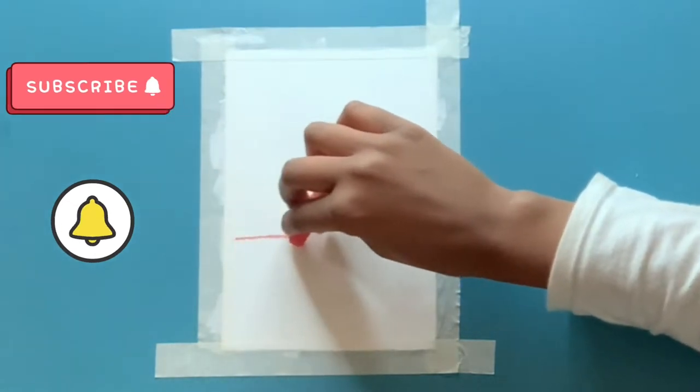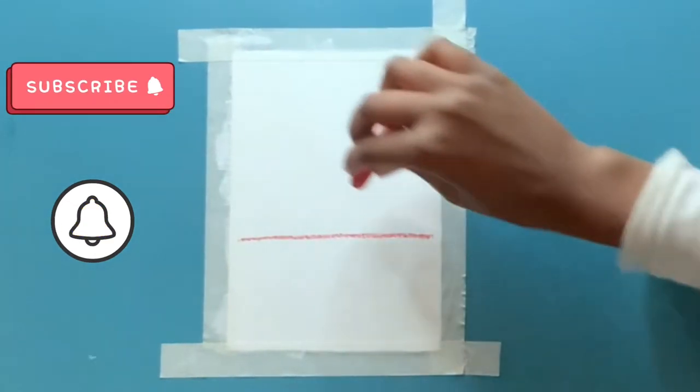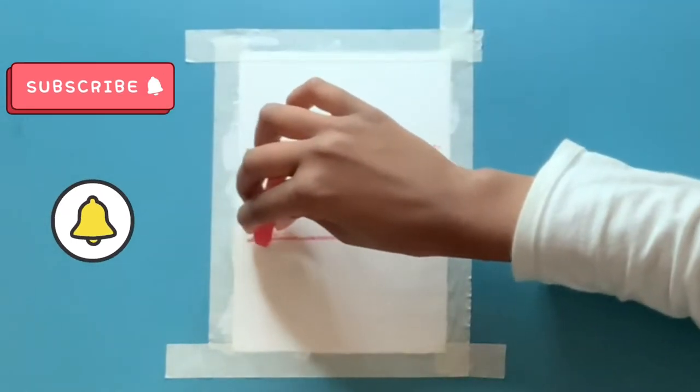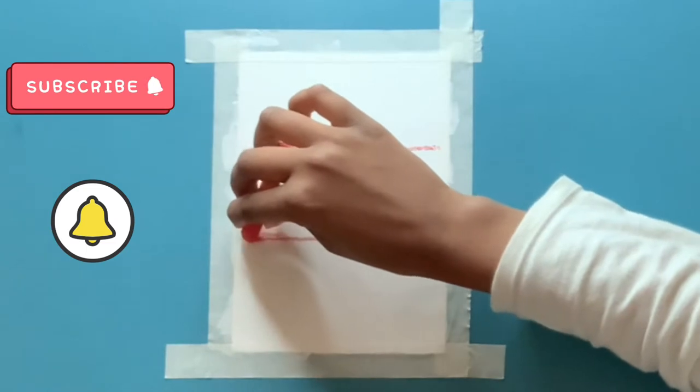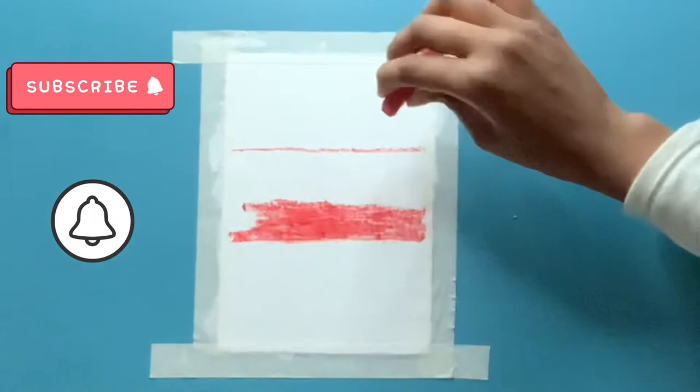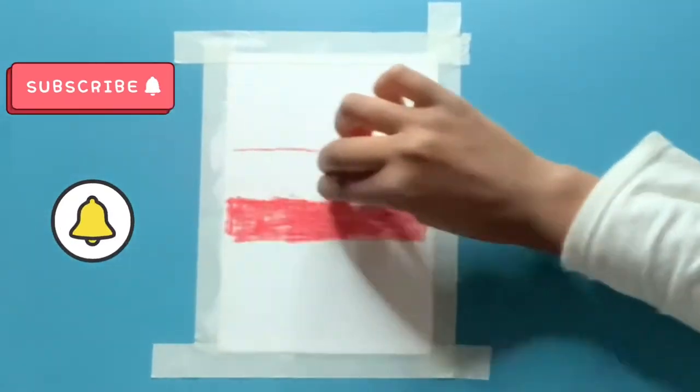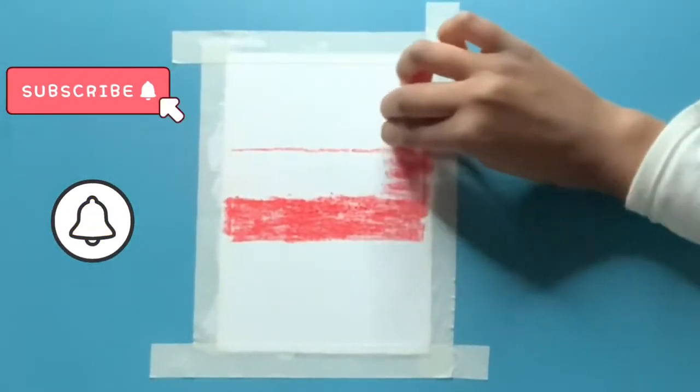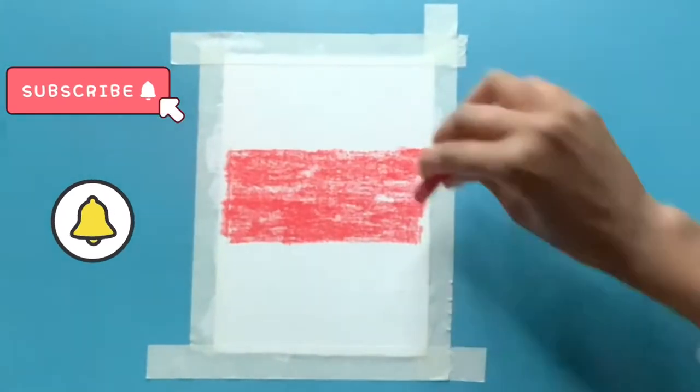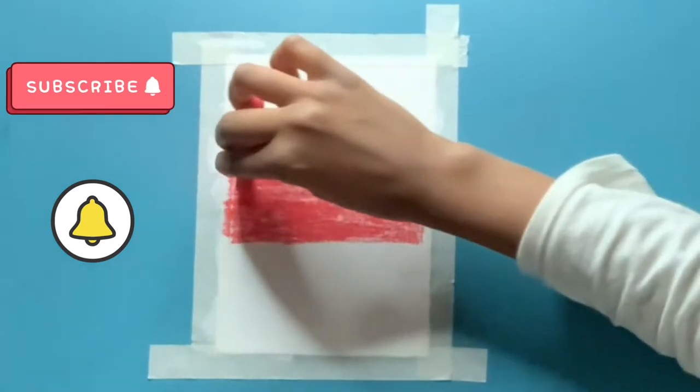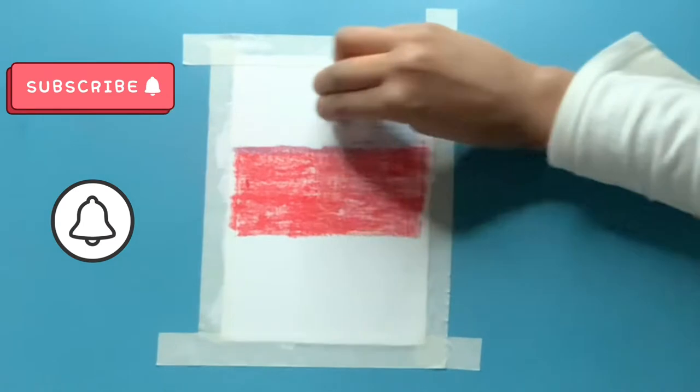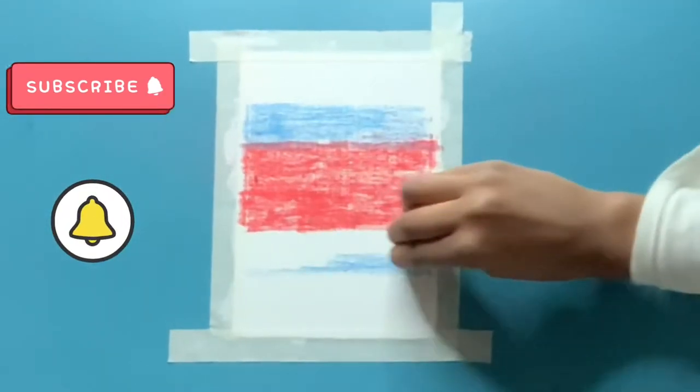First, I take a bright red and start coloring the middle section. Then I switch to an ultramarine blue, using it over and under the red.